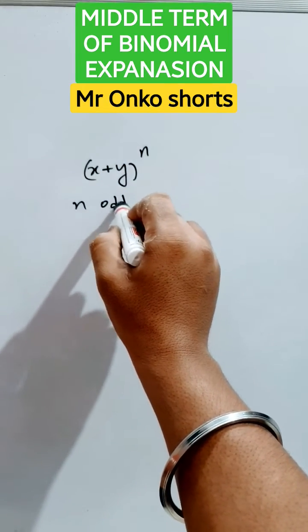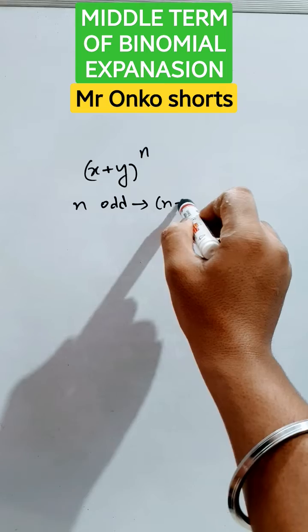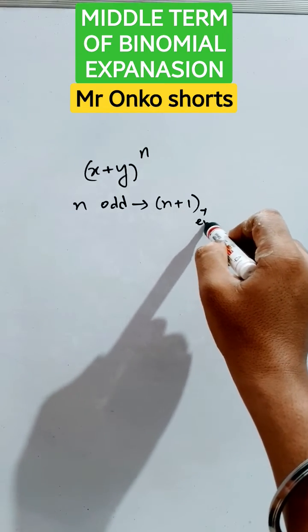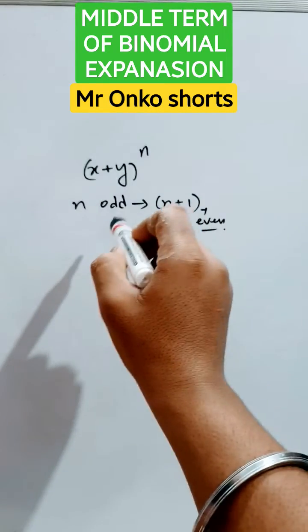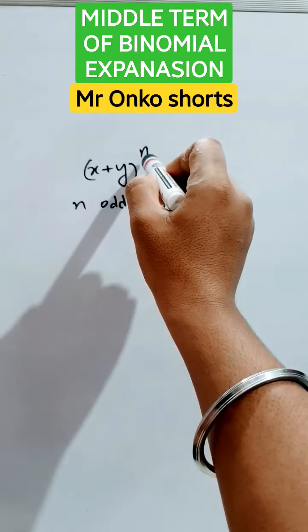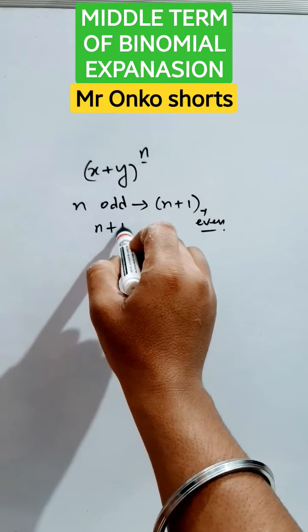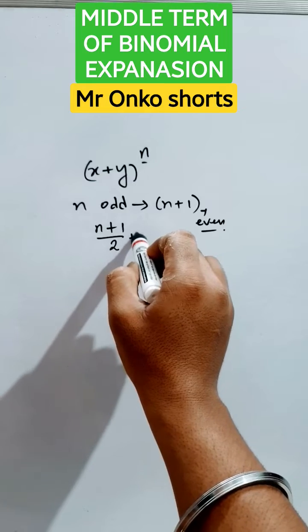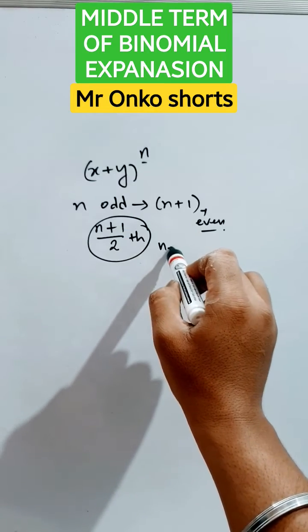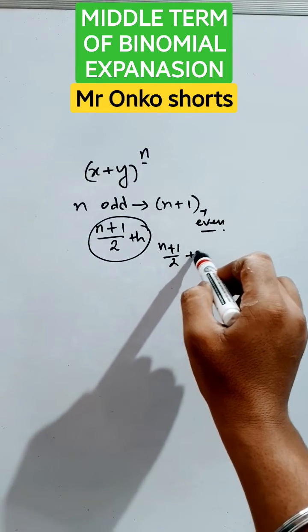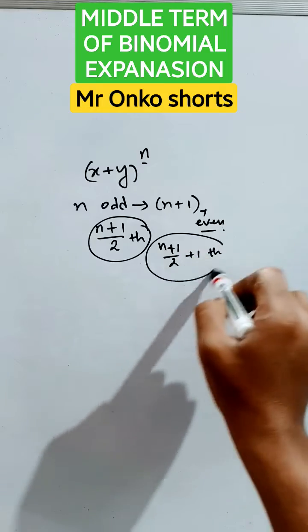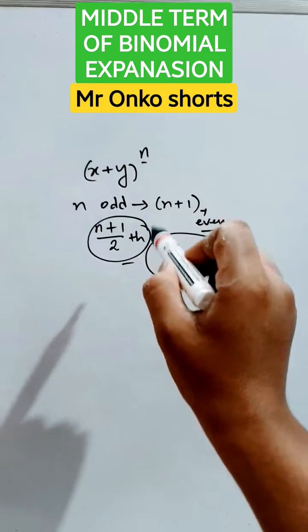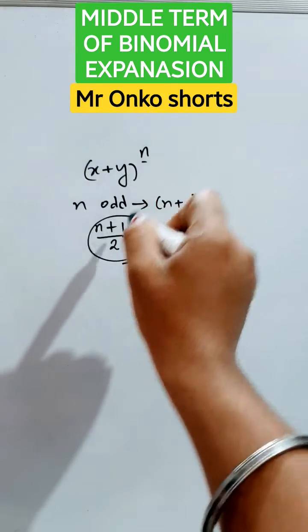Here n is odd, so we know that the number of terms is n + 1, and that is obviously even. Then the middle term will be (n + 1)/2 eth term and (n + 1)/2 + 1 eth term. These two terms will be the middle terms of the expansion whenever n is odd.